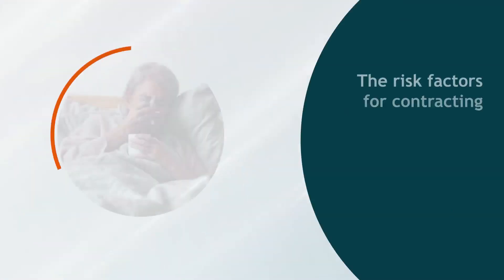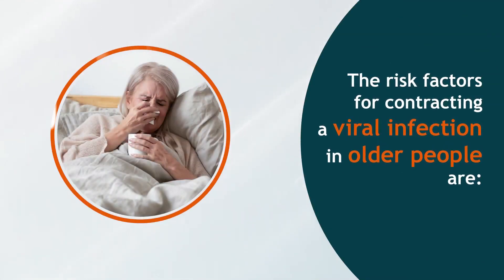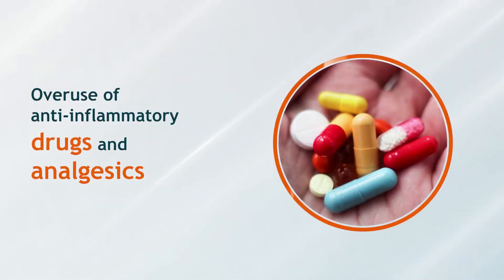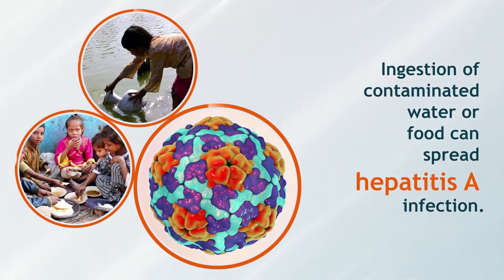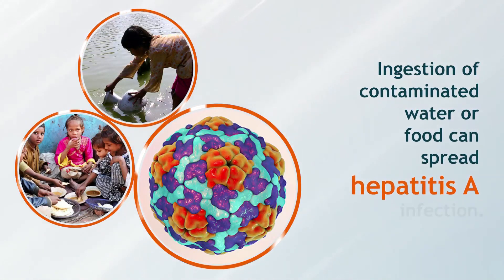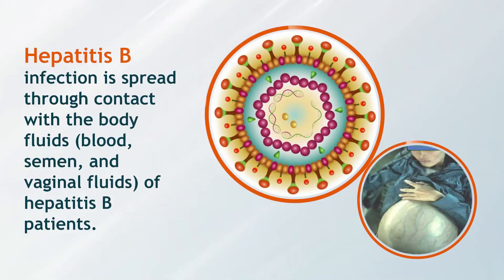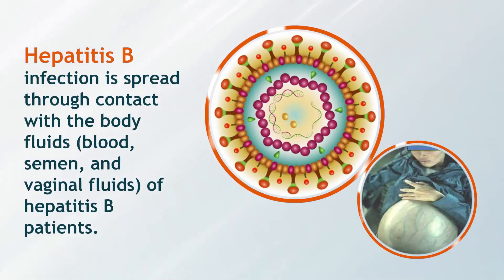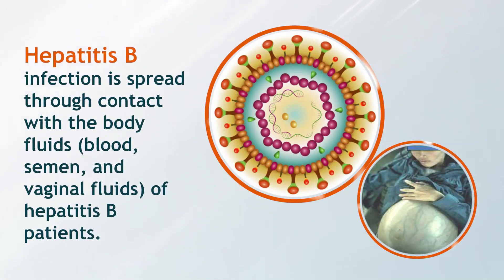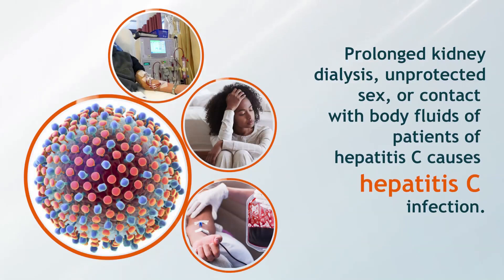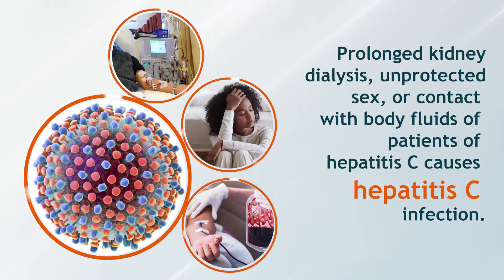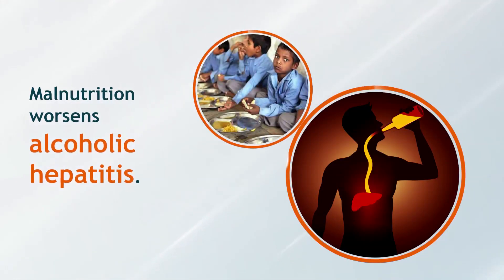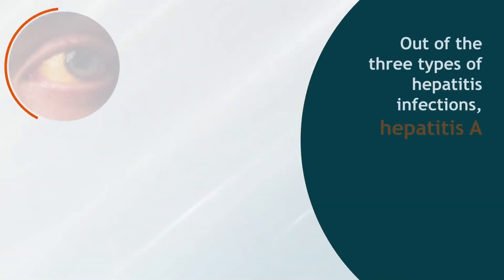The risk factors for contracting a viral infection in older people include overuse of anti-inflammatory drugs and analgesics. Ingestion of contaminated water or food can spread hepatitis A infection. Hepatitis B infection is spread through contact with the body fluids — blood, semen, and vaginal fluids — of hepatitis B patients. Prolonged kidney dialysis, unprotected sex, or contact with body fluids of hepatitis C patients causes hepatitis C infection. Malnutrition worsens alcoholic hepatitis.